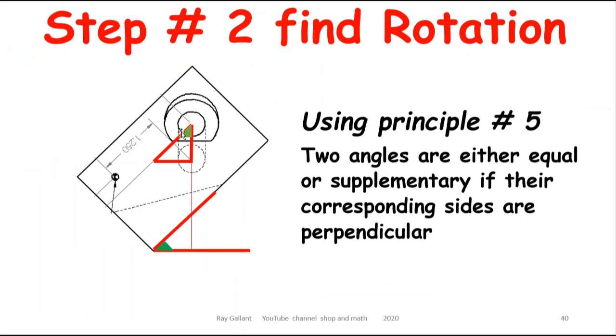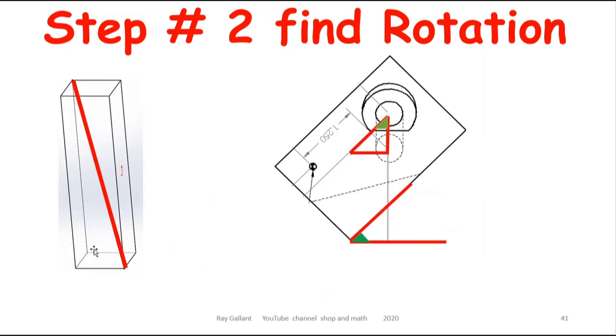Okay, so we're going to use principle 5 to switch our angles around for a rotation. So what we want to find is actually this little angle in here. So we're going to draw a line from here to here.